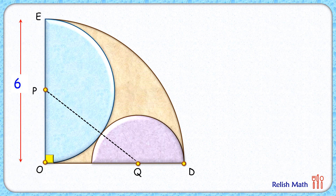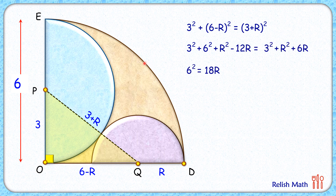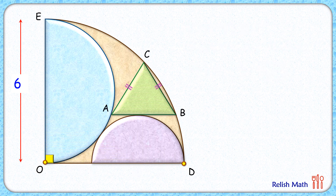We'll solve it in three steps. First step, we'll find the radius of the purple semicircle. The second step will find the length of the base for the triangle — that's the length AB. And the third step will find the height of the triangle and thus the area of the triangle.